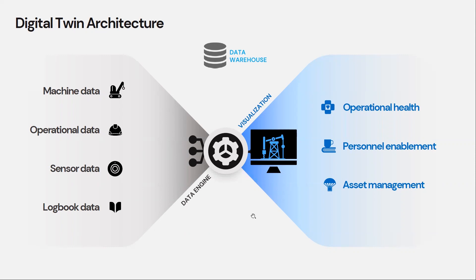Often when people talk about digital twin, they think about those very nice-looking 3D models. 3D models are awesome, but they're not essential. What's essential is a very easy way for the end user to absorb the insights coming out of the data. Along with the digital twin solution, there's pretty much always a data warehouse or data lake, where both the raw data and the processed output data get stored and used in business intelligence analysis.